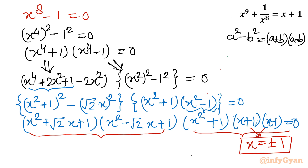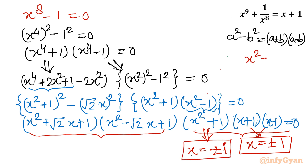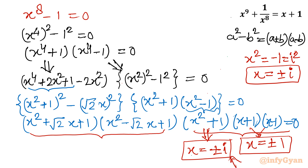Now from x² + 1 = 0, we get x² = -1 = i², so taking square roots gives x = ±i. This is the fundamental property of complex or imaginary numbers, not Euler's identity. So x = ±i are two complex solutions from this bracket.